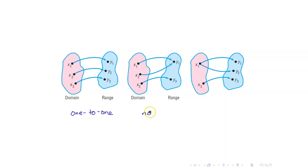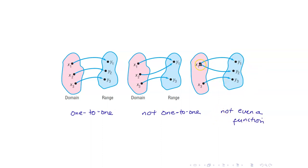So therefore, this is not one-to-one. For the last one, this is not even a function because an element x1 went to two different elements in the range.